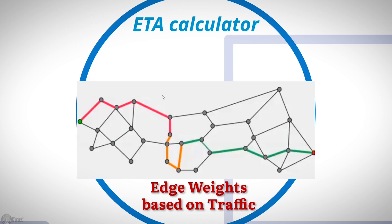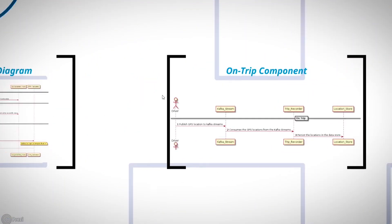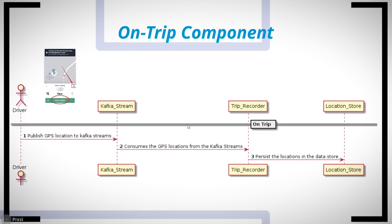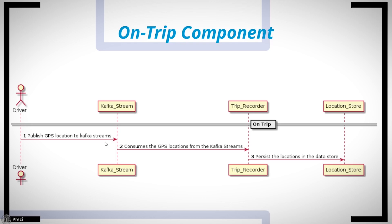Now let's dive into the on-trip component, where the driver presses 'Start Ride' and Uber's backend tracks the current location for post-trip receipt generation. In the sequence diagram, we have a message broker that listens to all events sent by the driver's app. We can use Apache Kafka, AWS Kinesis, Microsoft Event Hubs, or Google Pub/Sub. We're using Kafka Streams here because it is open source and cost-effective, as it doesn't charge per number of messages. Once the driver's location is sent to Kafka, it gets forwarded to the Trip Recorder service.